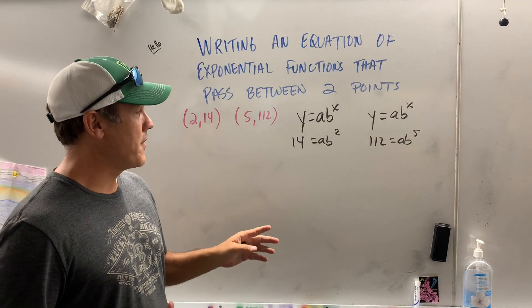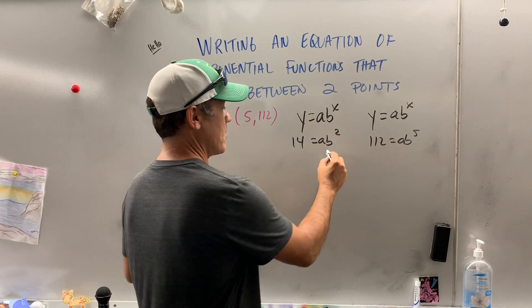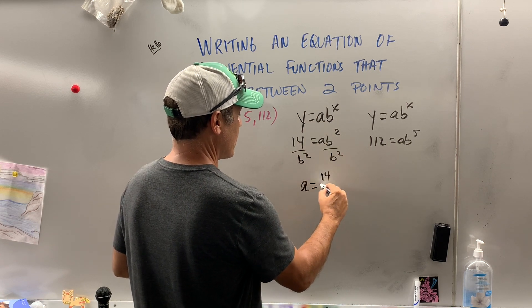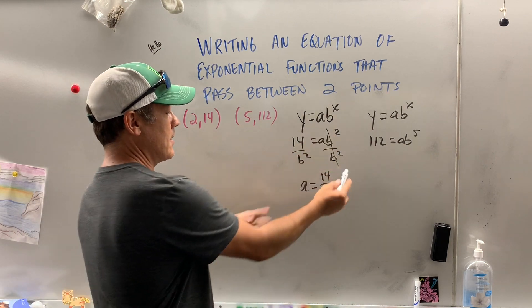Now I want to solve each of these for a variable. This one, although both solving for a, it seems the easiest. So I'm going to divide by b squared on both sides and we get a equals 14 over b squared. Do you see what I did? These canceled. I just flip-flopped them.